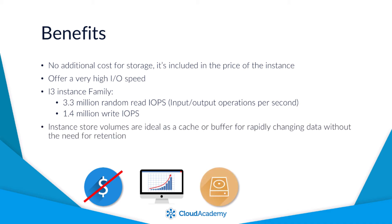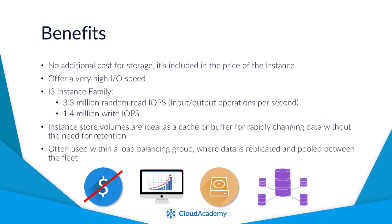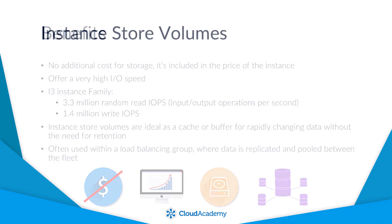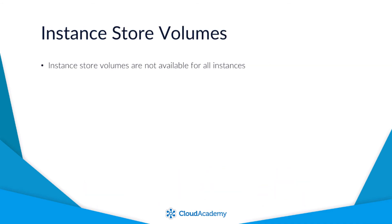Instance store volumes are generally used for data that is frequently changing and doesn't need to be retained — as such they are great to be used as a cache or buffer. They are also commonly used for servers within a load balancing group where data is replicated across the fleet, such as a web server pool. Not all instance types support instance store volumes, so be sure to check the latest AWS documentation to ascertain if the instance type you are looking to use supports the volume.